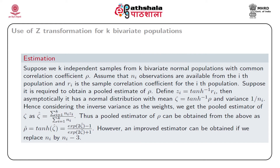We define z_i as tanh-inverse(r_i). Then asymptotically it has a normal distribution with mean zeta, defined as tanh-inverse(rho), and variance 1/n_i. Hence, considering the inverse variance as the weights, the pooled estimator of zeta is zeta-hat, defined as the weighted mean: summation of n_i * z_i divided by summation of n_i. Since rho is a one-to-one function of zeta, the pooled estimator of rho is rho-hat = tanh(zeta-hat). In practice, it has been shown it is better to replace n_i by n_i minus 3.